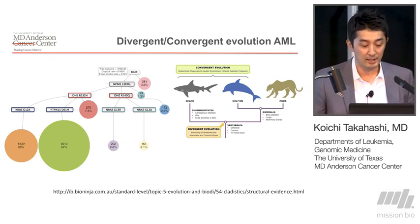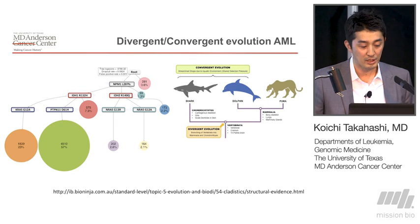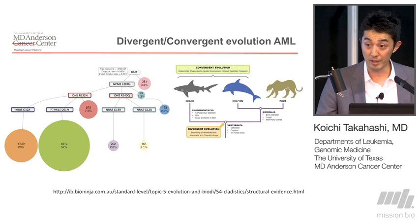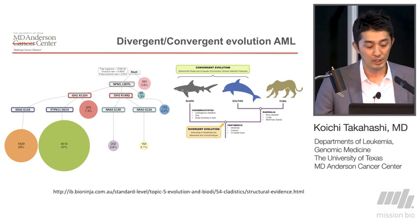And again, these two branches independently started to acquire KRAS, PTPN11, NRAS, and another NRAS mutation.